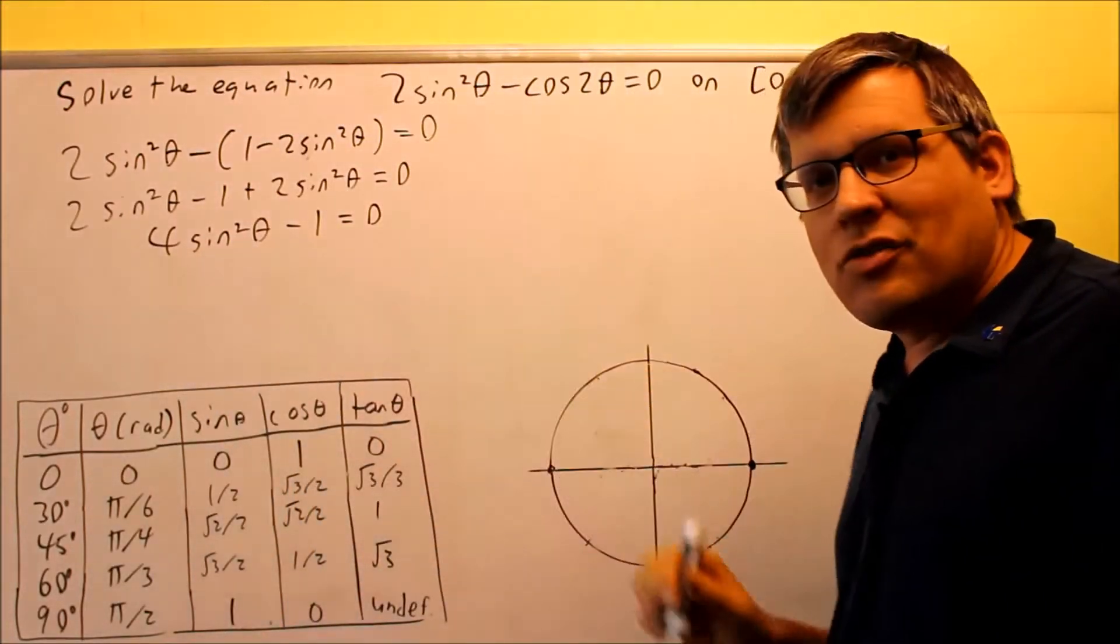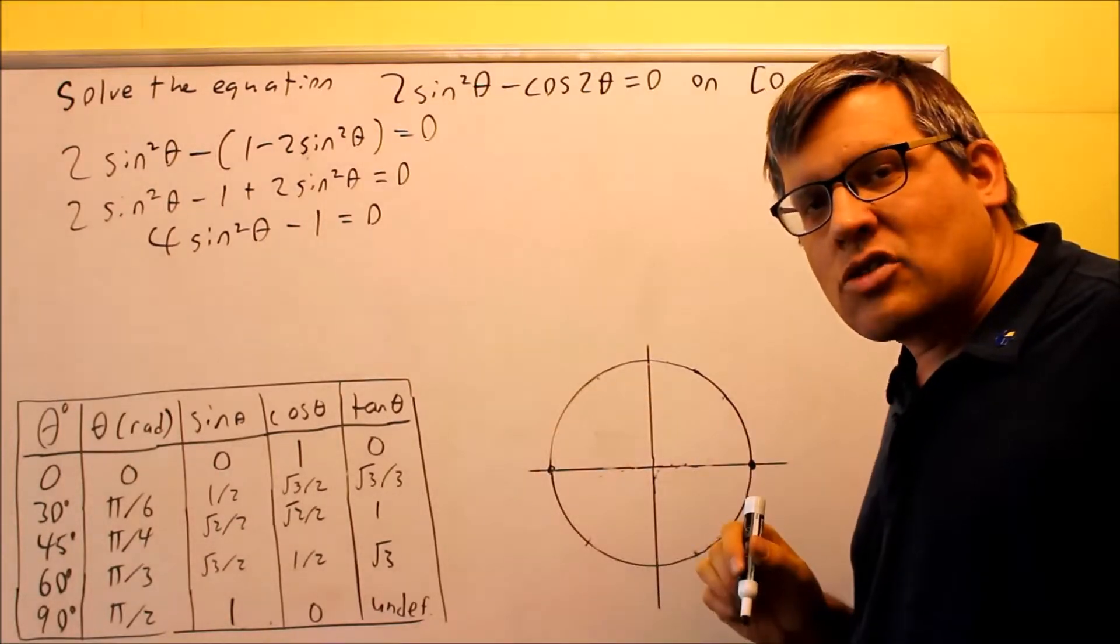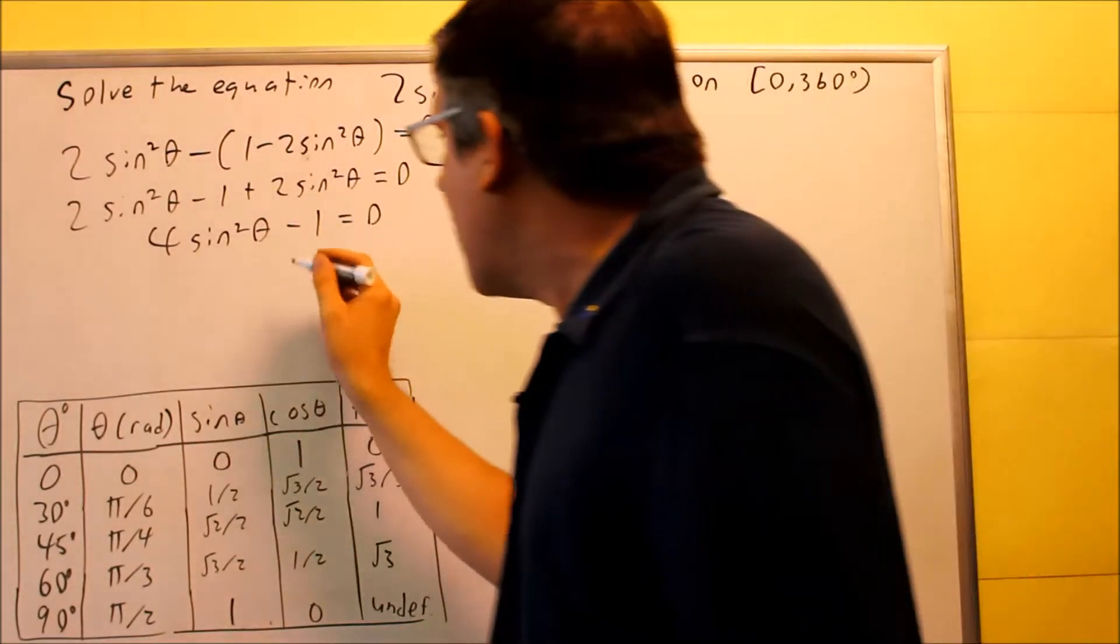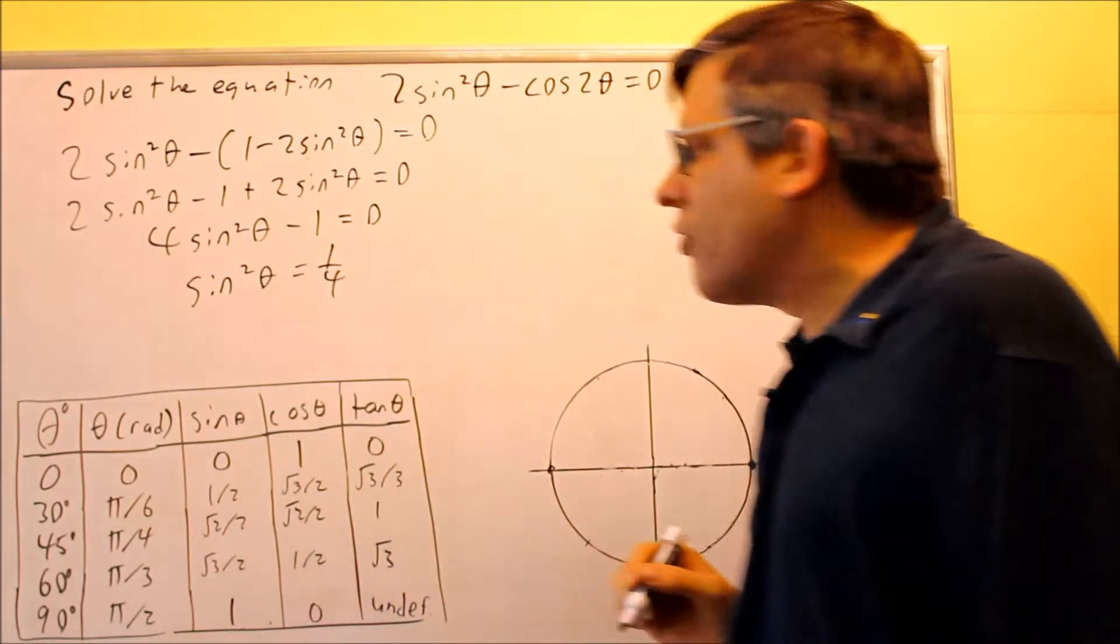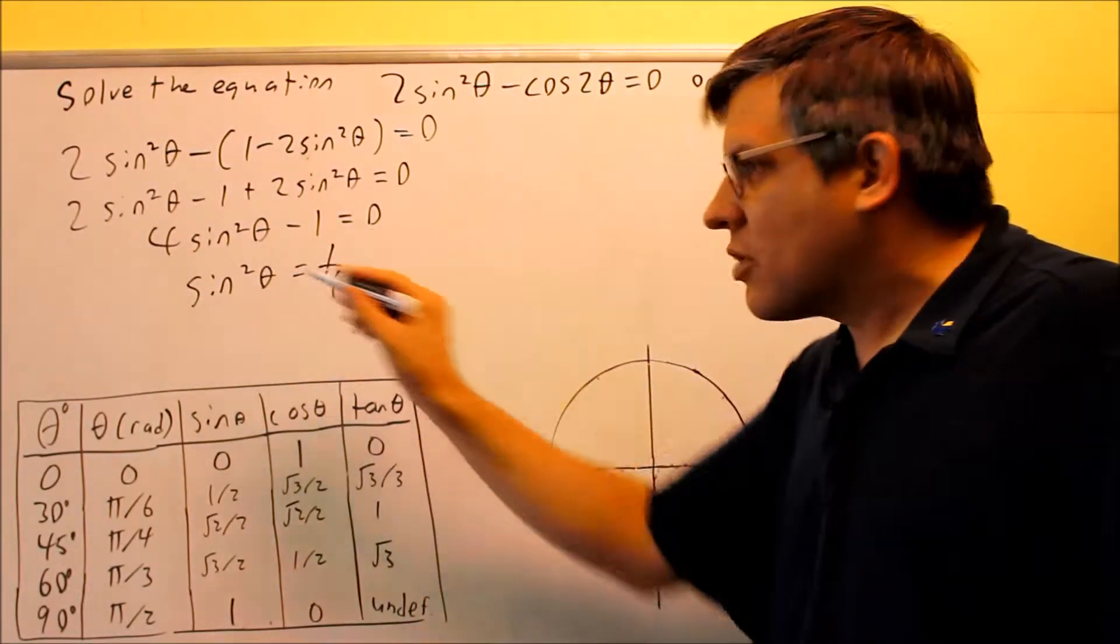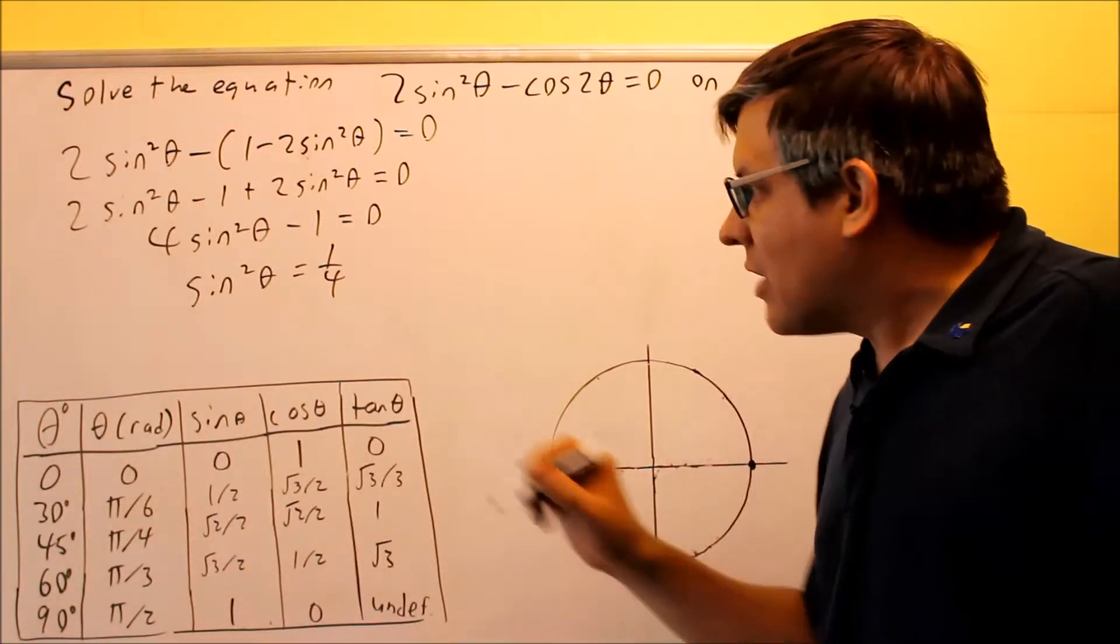We're going to solve this for sine squared and we'll have to take the square root. We add one to both sides and divide by four. You're going to get sine squared theta equals one-fourth.